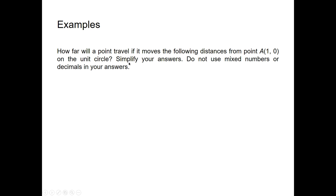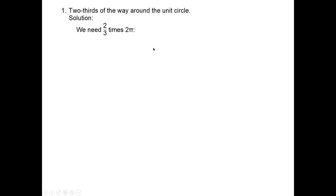Examples: How far will a point travel if it moves the following distances from point A at (1, 0) on the unit circle? First, two-thirds of the way around the unit circle. We need two-thirds times 2π, giving 4π/3. So two-thirds around the circle is 4π/3 units.